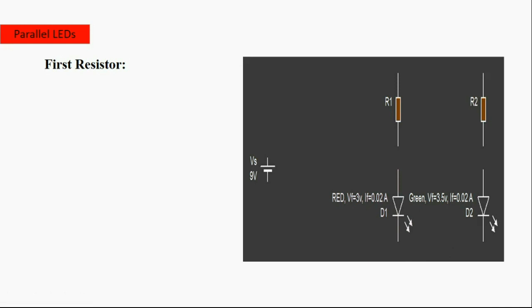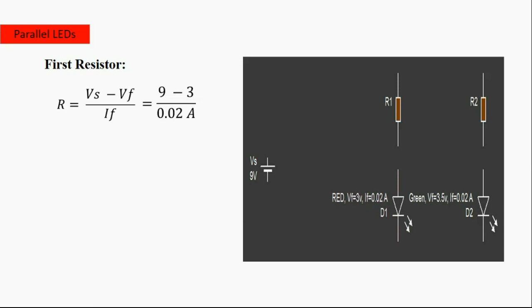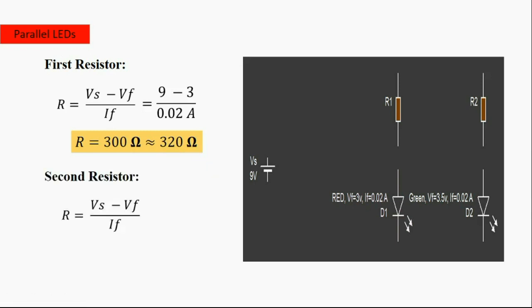For parallel LEDs, the best option is to use a separate resistor for each LED. Here we have two LEDs. For the first — a red LED with a forward voltage of 3 volts and forward current of 0.02 amperes — the calculation is the same as before: supply voltage minus forward voltage, divided by forward current, giving 300 ohms. The nearest standard value is 320 ohms.